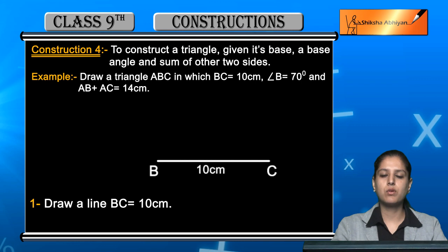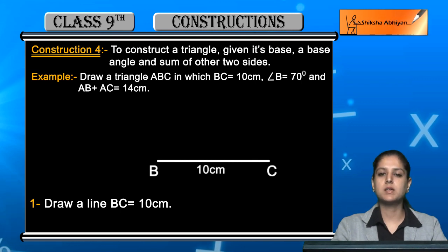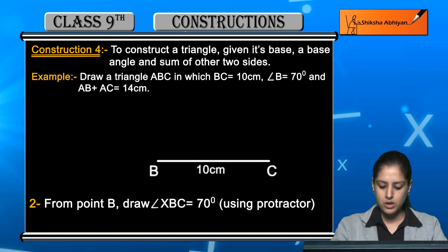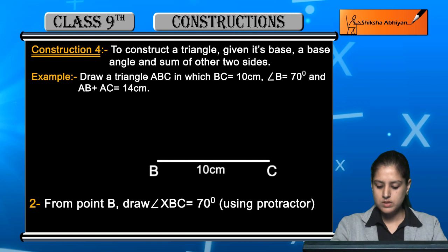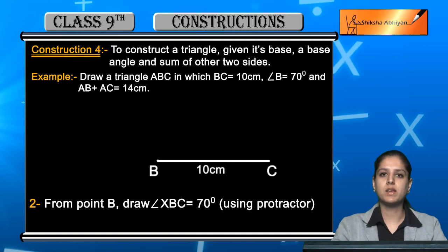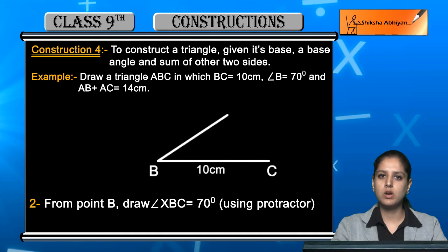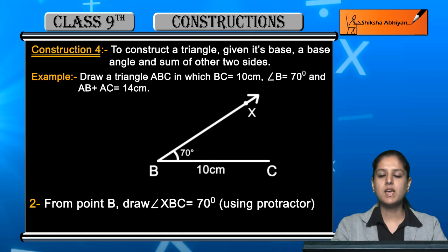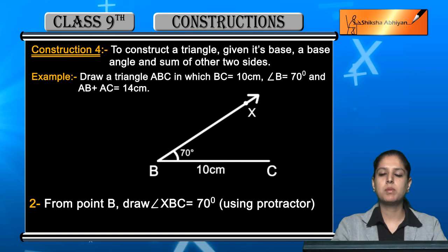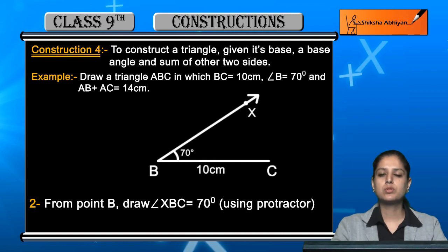The next step is to draw the base angle. In this case the base angle at B is 70 degrees. So from point B, draw a ray BX such that angle XBC is equal to 70 degrees using a protractor. The angle given is angle B which is 70 degrees, so at point B we draw an angle of 70 degrees and name the ray BX.